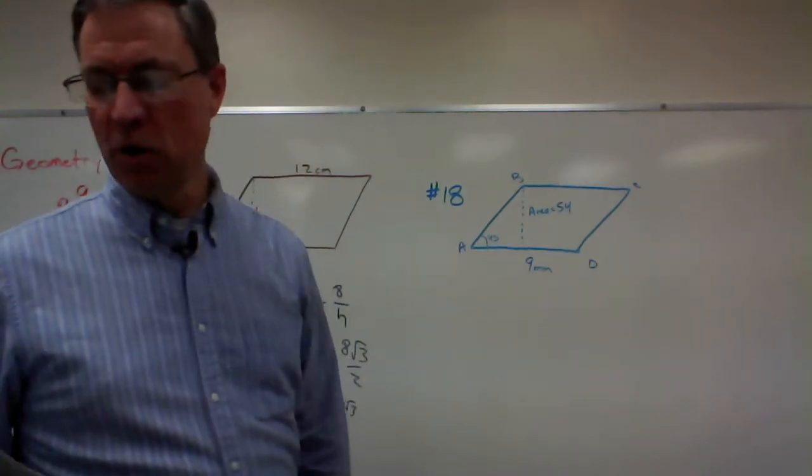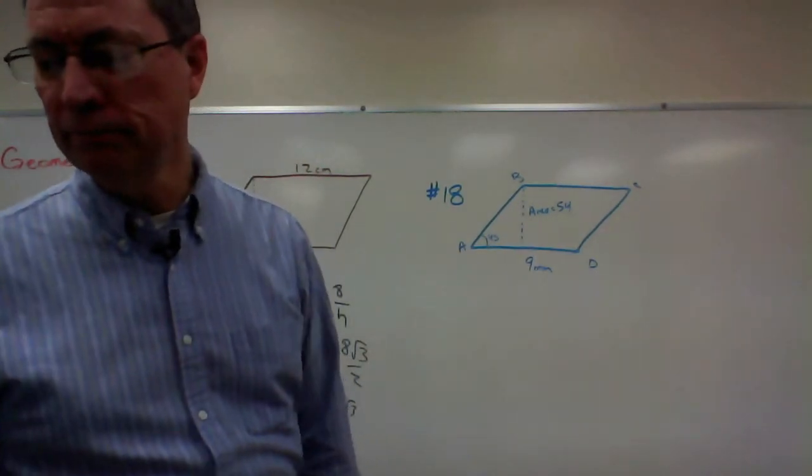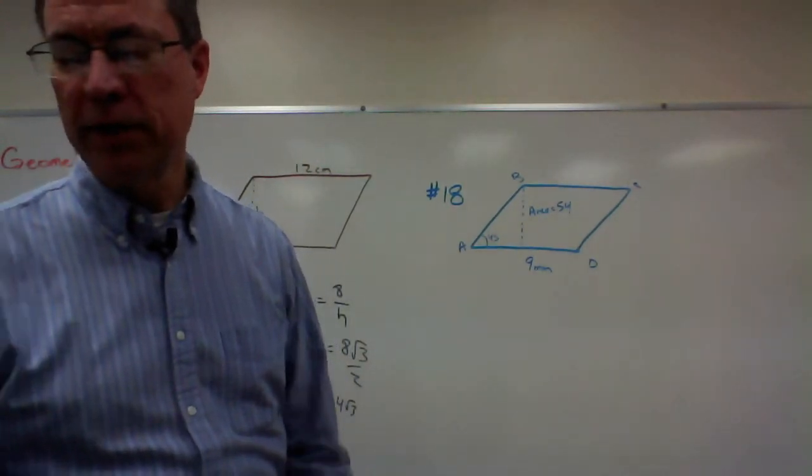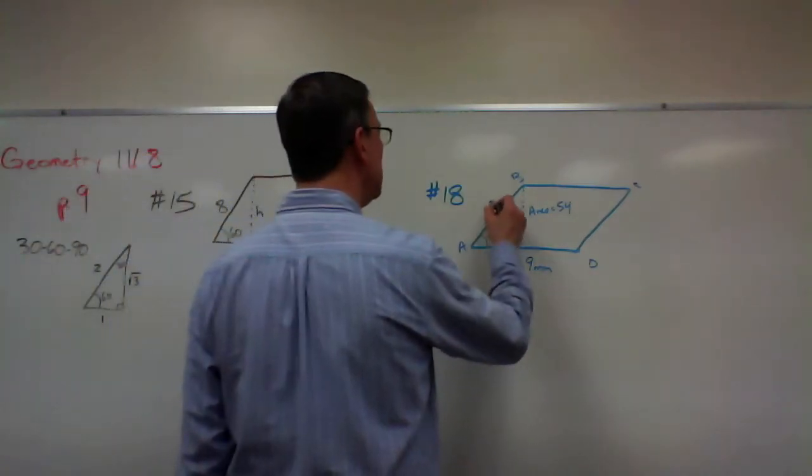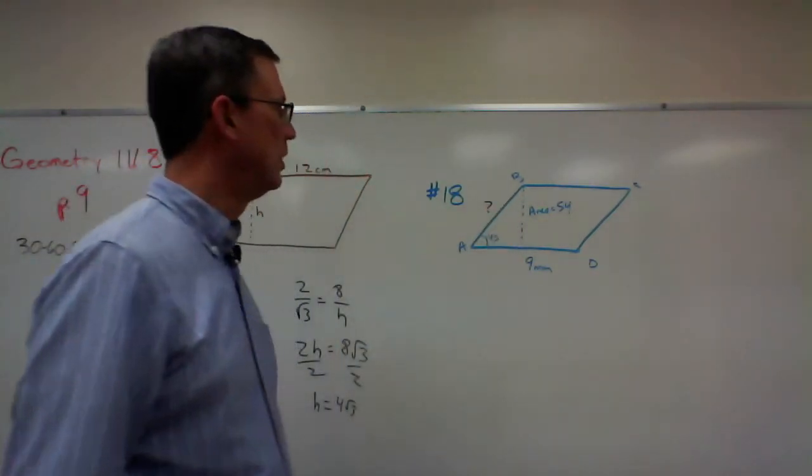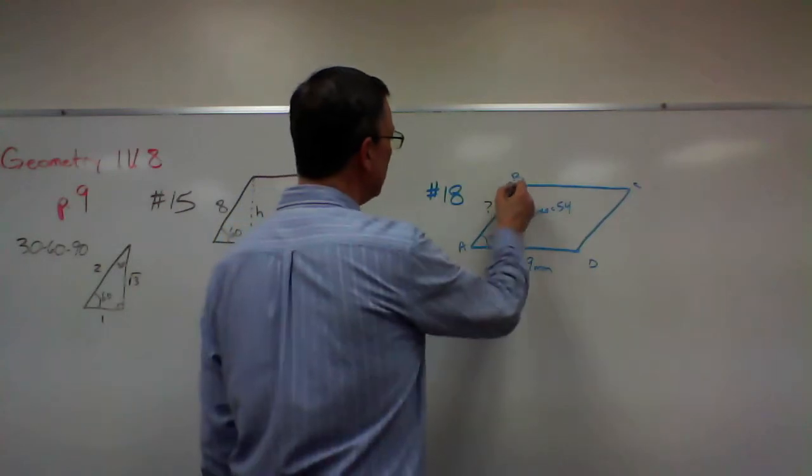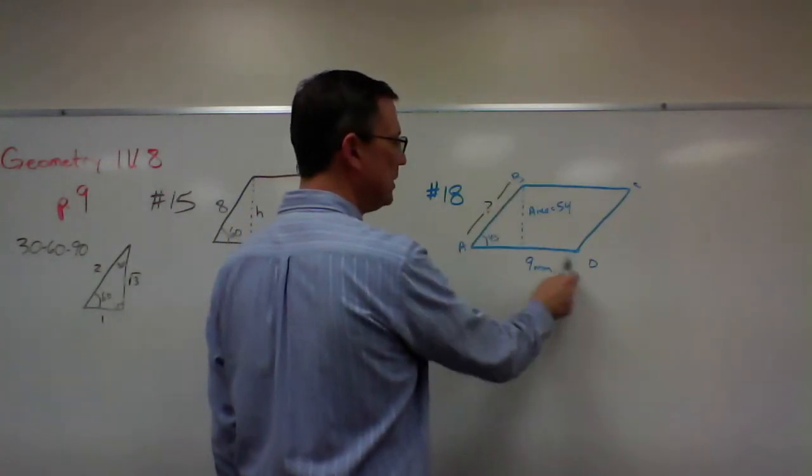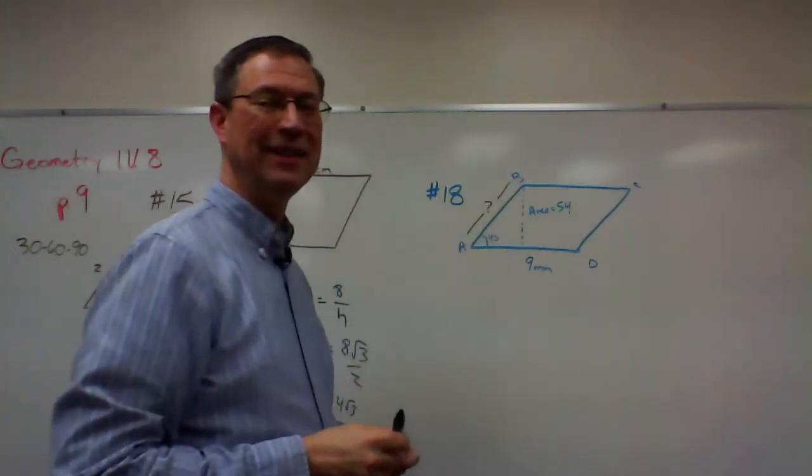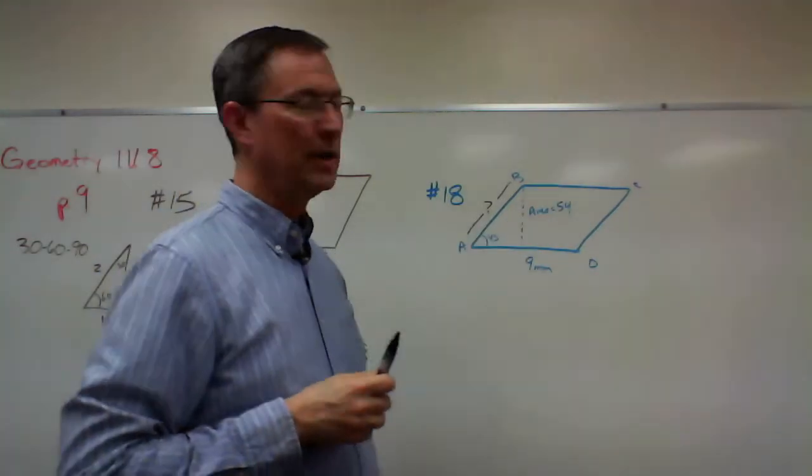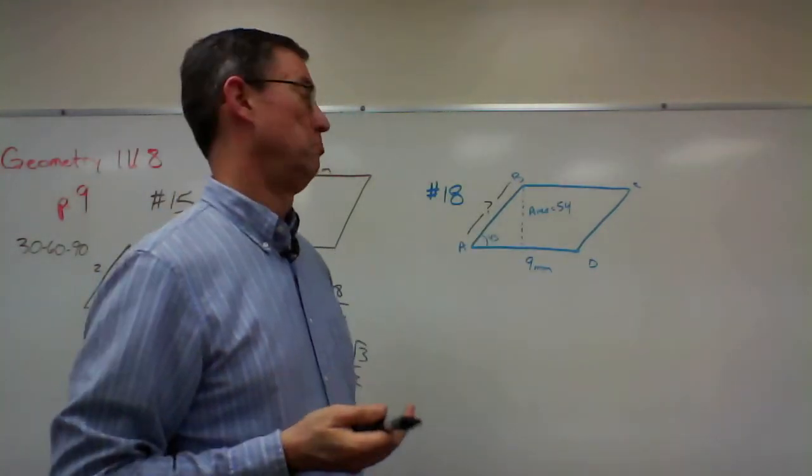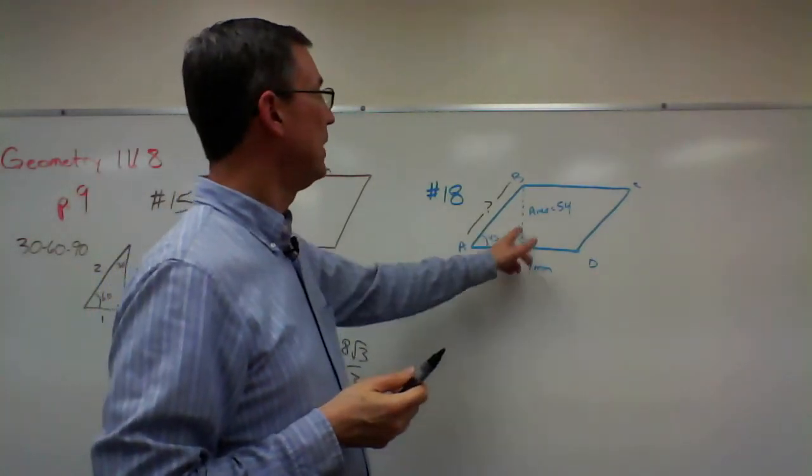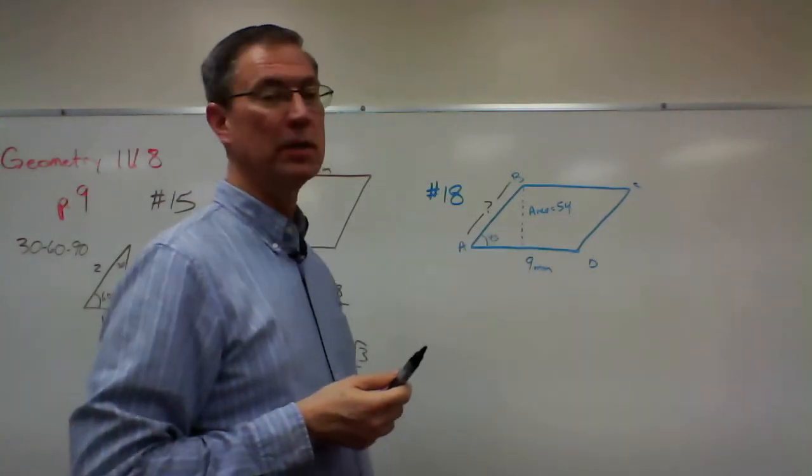They actually want us to solve for the length of AB. So this is what we don't know from here to here. But they tell us that the base is 9 and they tell us that the area is 54. So actually we can find this side very easily.